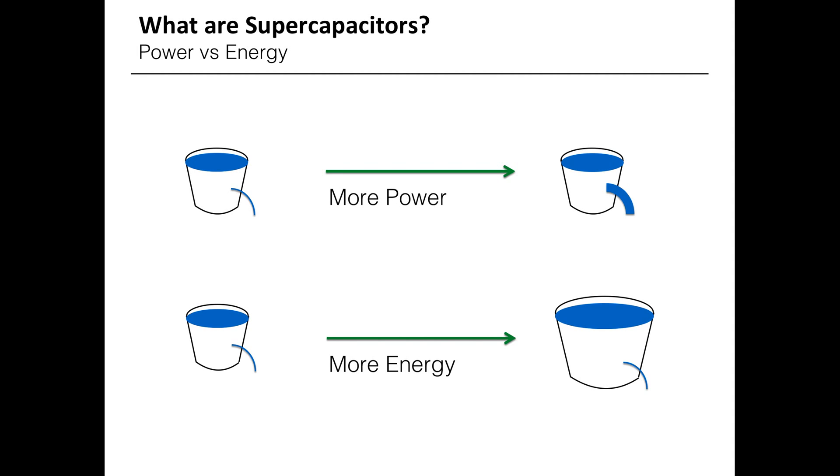The rate at which water can flow out of the bucket is analogous to the power. The amount of water that can be held within the bucket is analogous to the energy capacity.